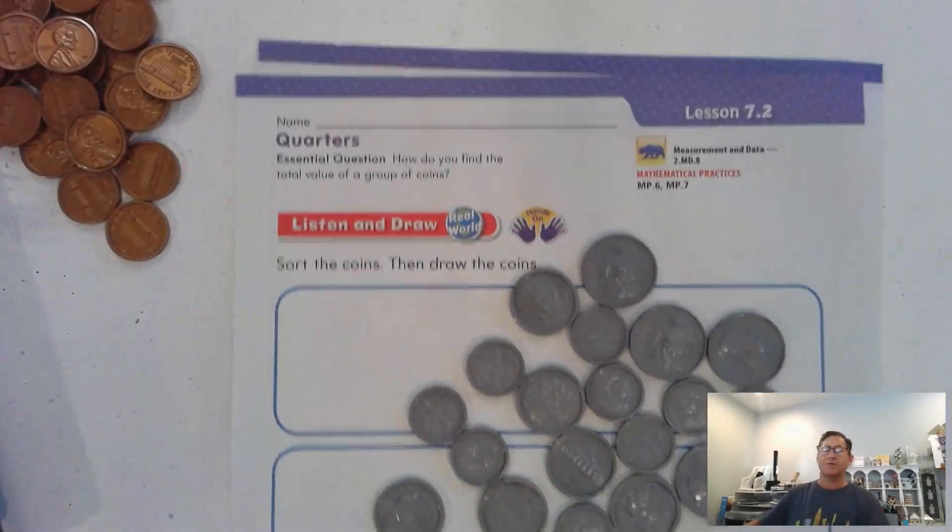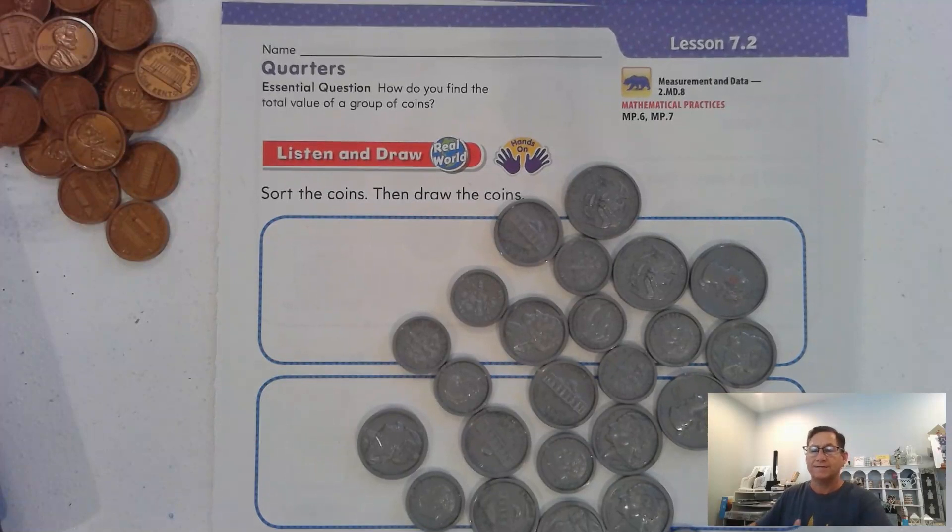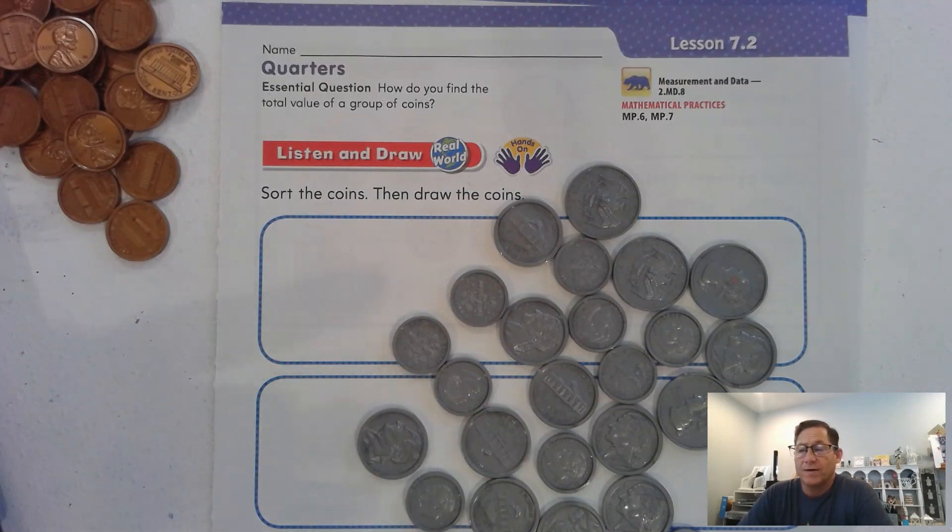All right, so in this lesson we're going to continue with coins. Today we're going to introduce the idea of quarters. We're on lesson 7.2, and basically it's how do you find the total value of a group of coins.